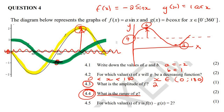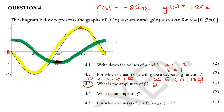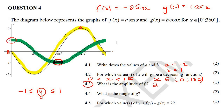This question says what is the range of g? Remember that range is the y values. For the green graph, the lowest y value is negative one and the highest y value is positive one. So we go from minus one to one. In set builder notation, y is any number bigger than or equal to minus one and smaller than or equal to positive one. In interval notation, y is an element going from minus one up to one, and it includes those values because the graph touches both minus one and positive one.